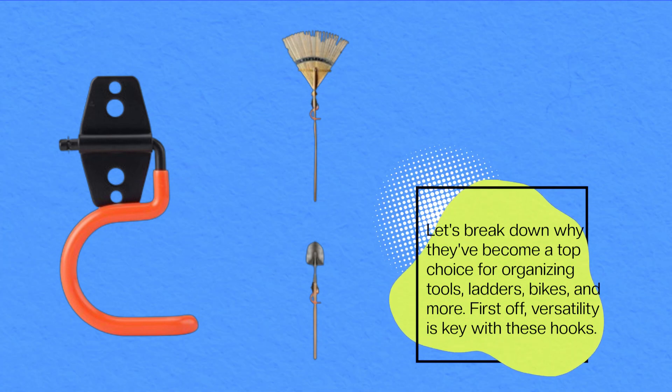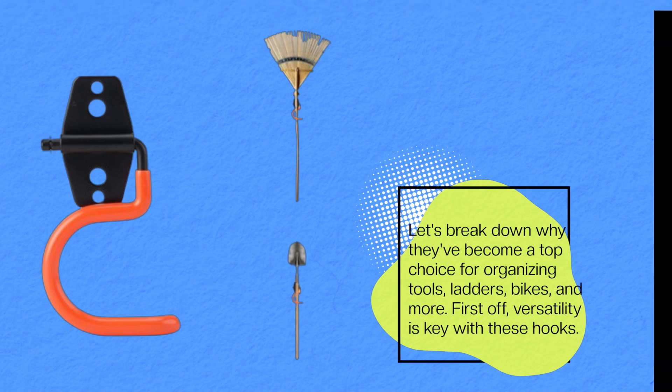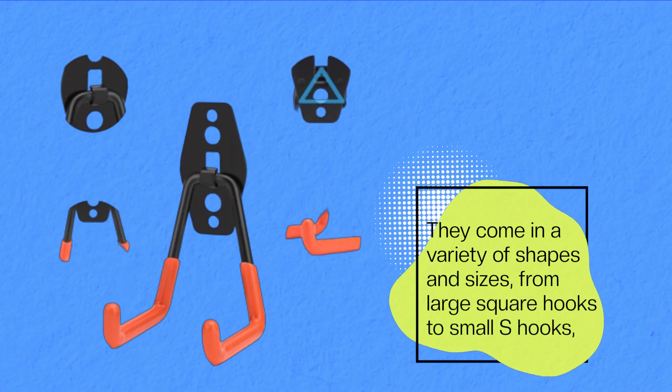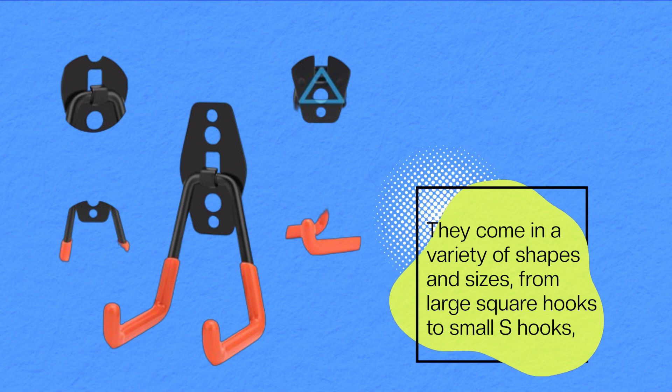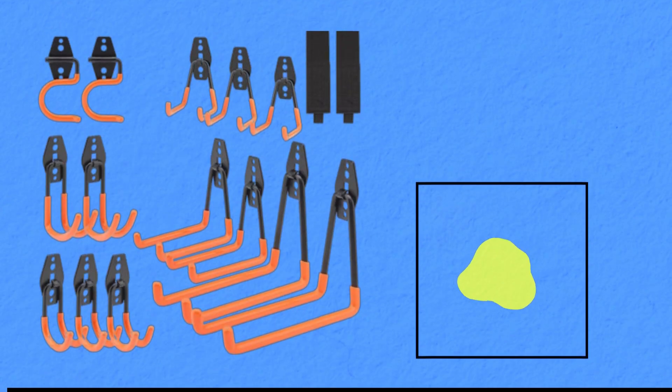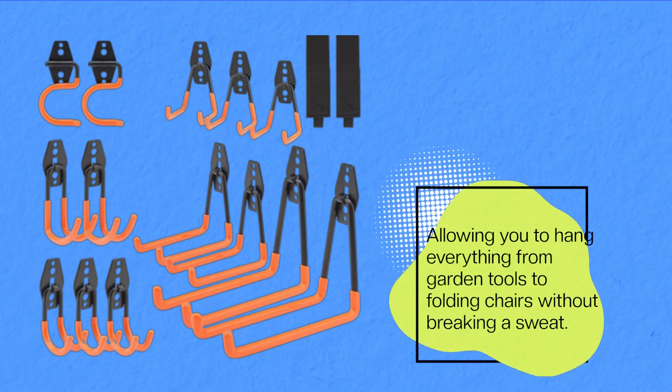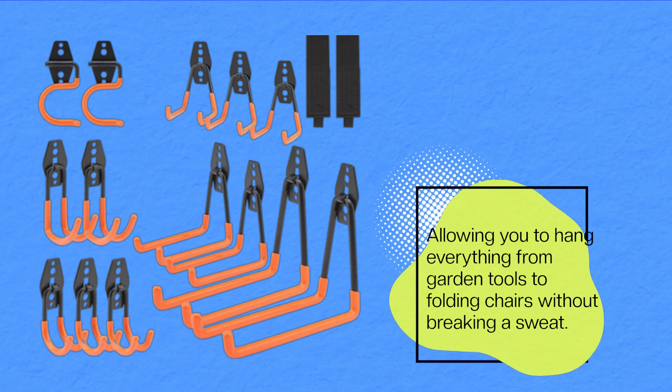First off, versatility is key with these hooks. They come in a variety of shapes and sizes, from large square hooks to small S-hooks, allowing you to hang everything from garden tools to folding chairs without breaking a sweat.